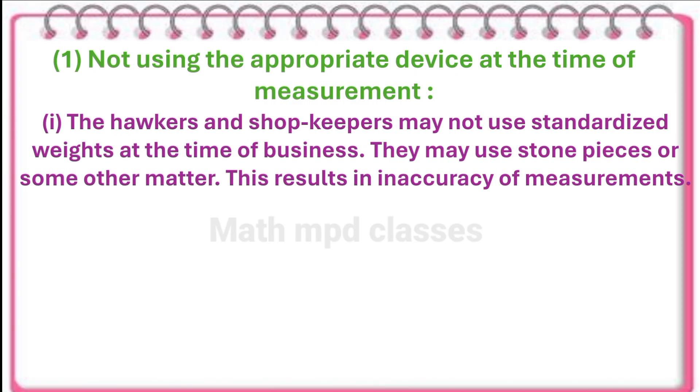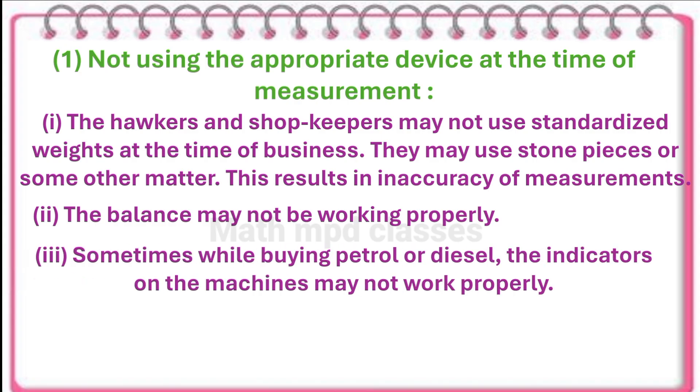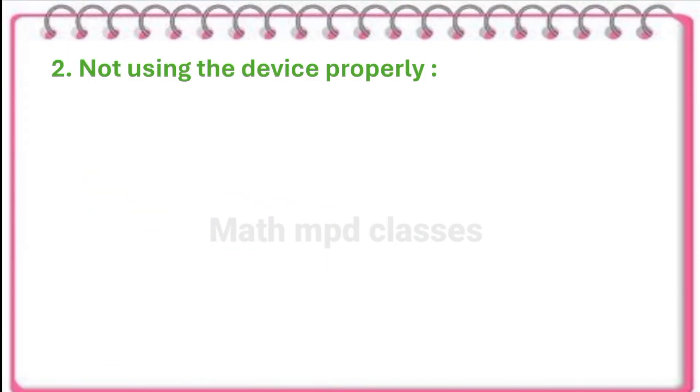The hawkers and shopkeepers may not use standardized weights at the time of business. They may use stone pieces or some other matter. This results in inaccuracy of the measurement. Second point, the balance may not be working properly. Third point, sometimes while using petrol or diesel, the indicators on the machine may not work properly.